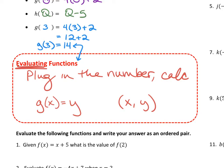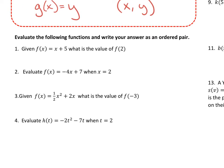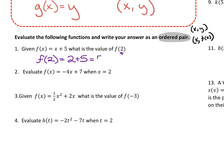Let's see a few examples of evaluating functions. The instructions say to evaluate and write your answer as an ordered pair — written as x, y, or using function notation, x, f of x. Number one: given f of x equal to x plus 5, what is the value of f of 2? Since there's a 2 inside the parentheses, I replace every x with a 2. So f of 2 is 2 plus 5, which is 7. The ordered pair is input 2 and output 7.